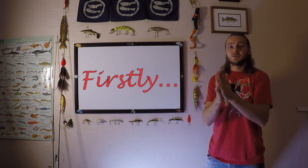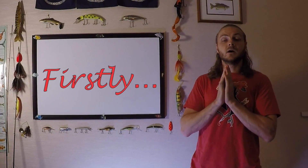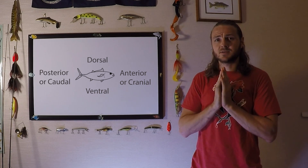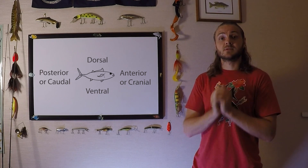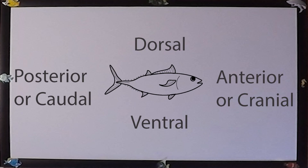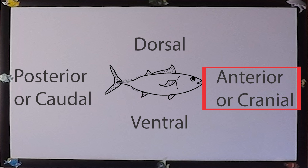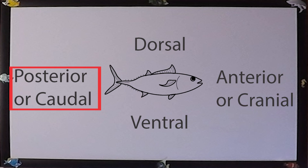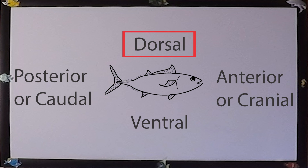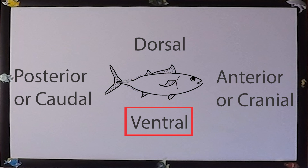Before covering the essential basics of cartilaginous fishes — sharks, skates, rays, and chimeras — we need to go over four basic directional components to help identify the parts of fishes. The front of the fish where the head is is the anterior portion, also known as the cranial region. Opposite that, near the tail, is the posterior end, also known as the caudal region. On the back we call that the dorsal region, and near the breast and belly is the ventral region.